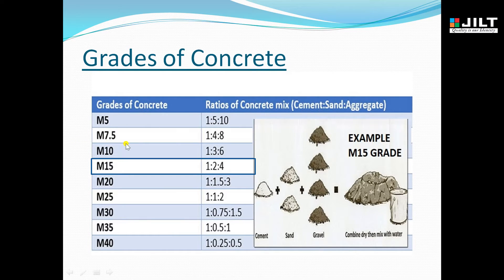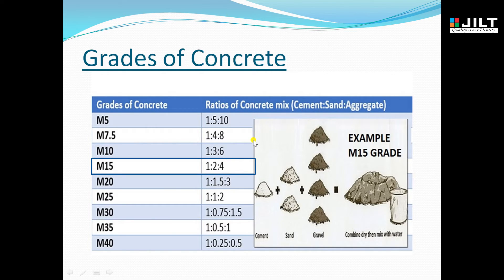M7.5 grade of concrete has a mix proportion of 1:4:8. M10 is 1:3:6. M15 is 1:2:4. M20 is 1:1.5:3. M25 is 1:1:2. M30 is 1:0.75:1.5. M35 is 1:0.5:1. M40 is 1:0.25:0.5. This chart will help you understand the ratios of mix proportions for each grade of concrete.